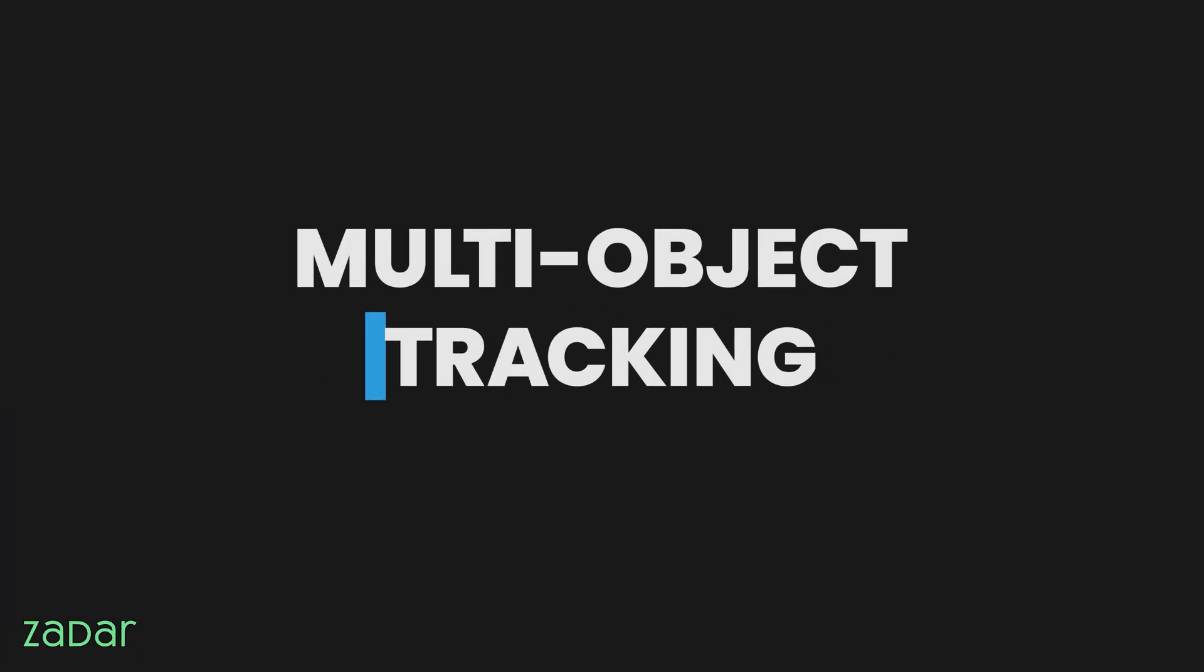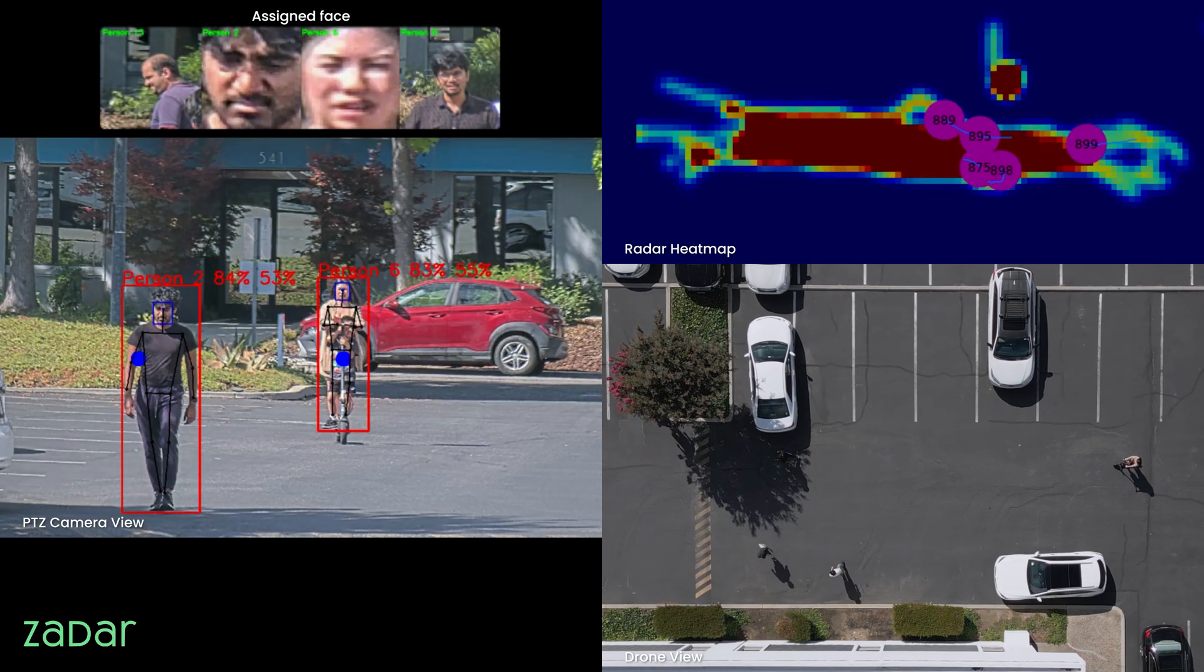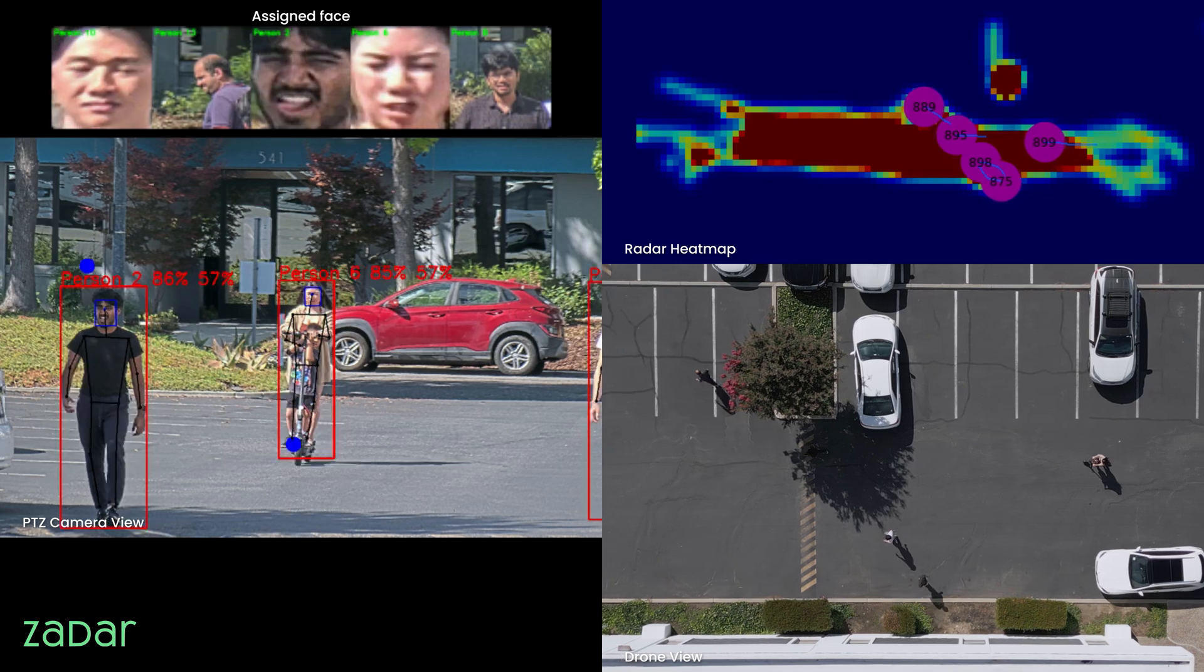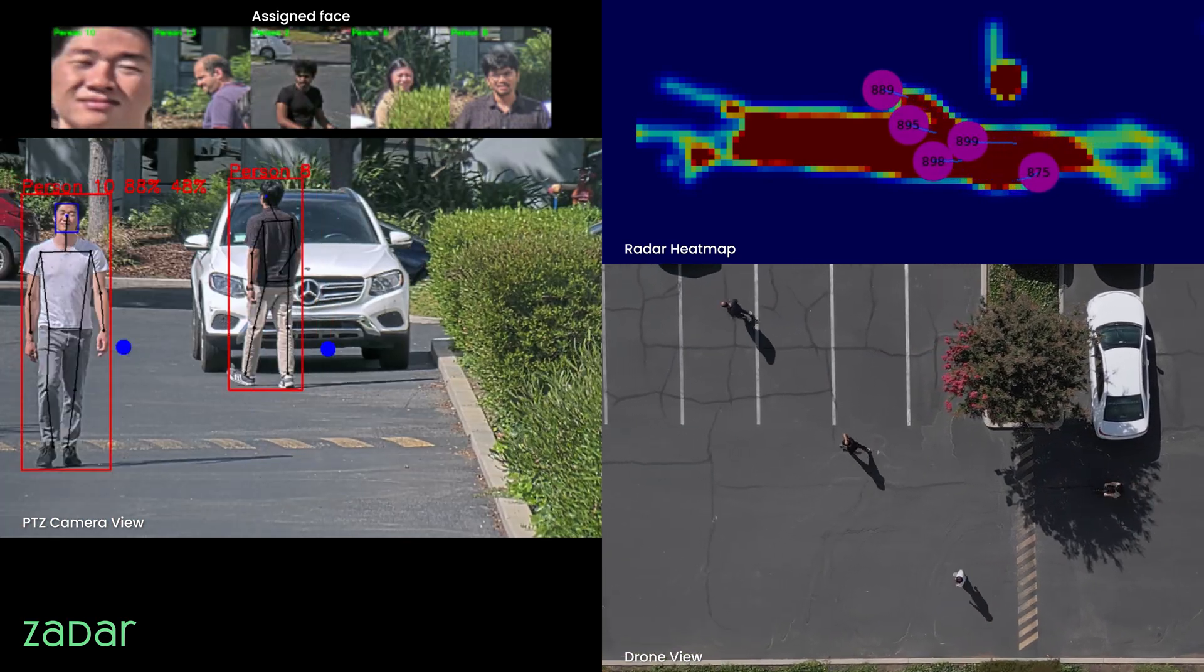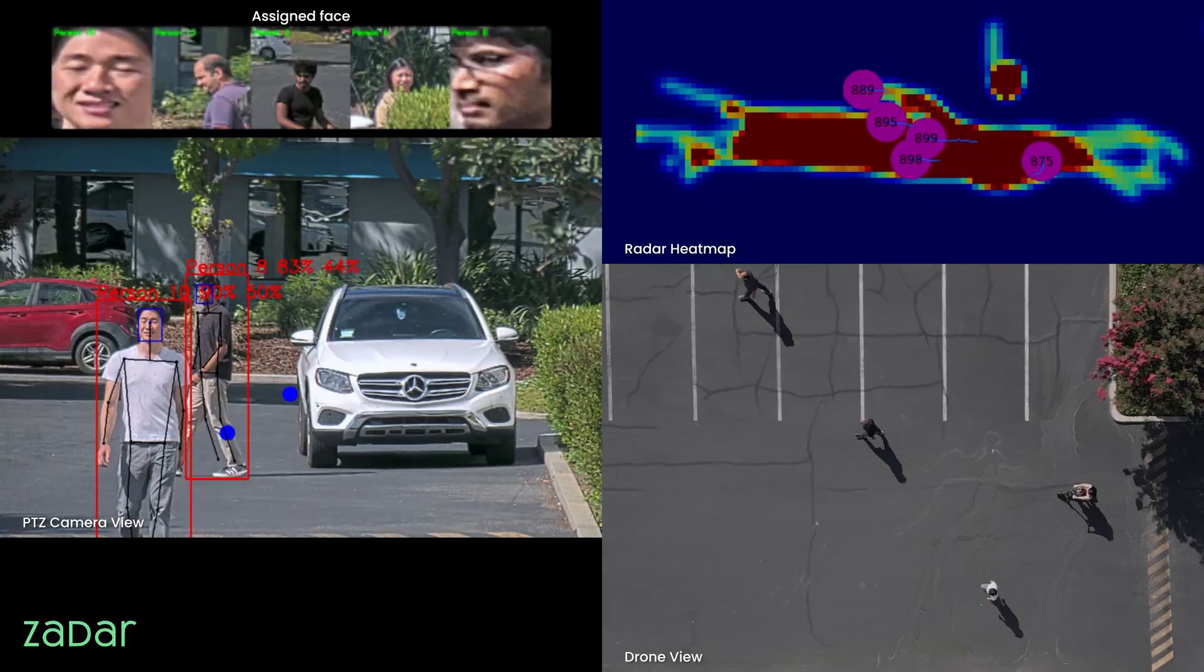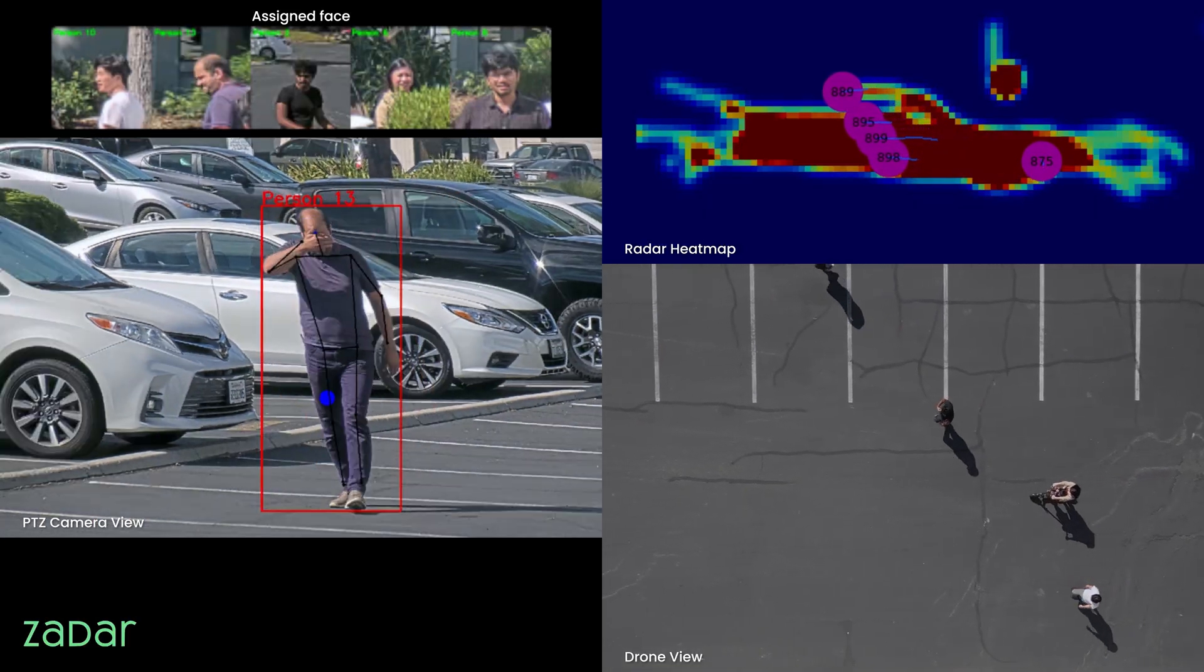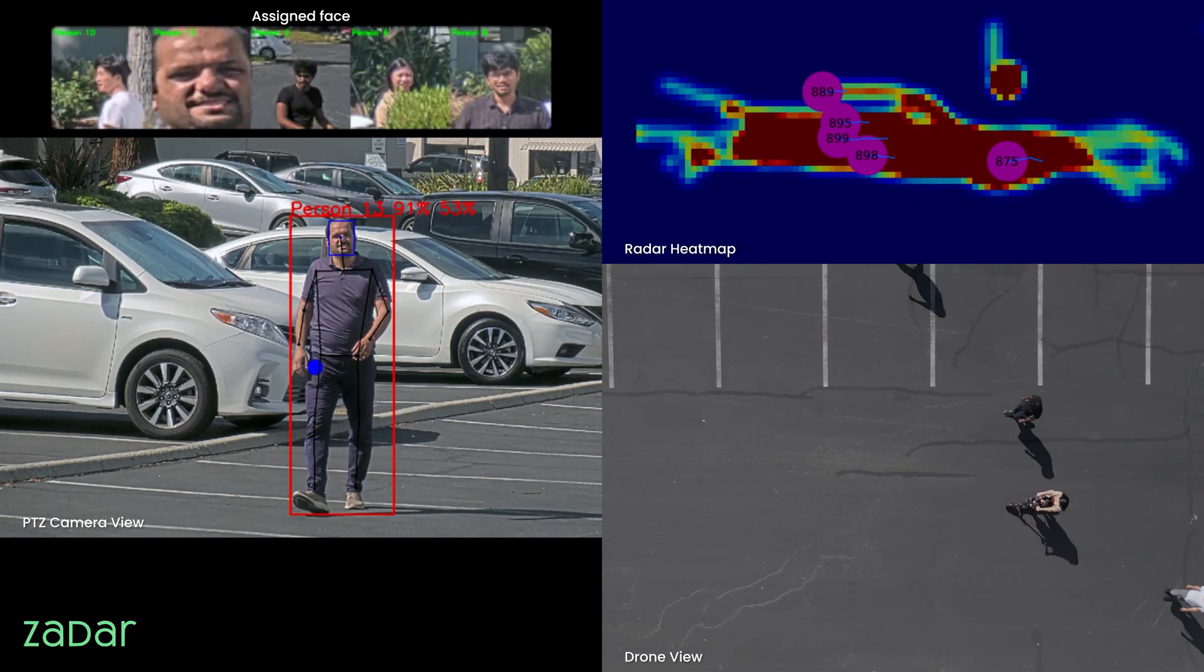Multi-object tracking. From dense crowds to open spaces, Z-Prime tracks multiple objects at once, separating individuals and assigning unique IDs. Multi-object tracking without confusion, without compromise.